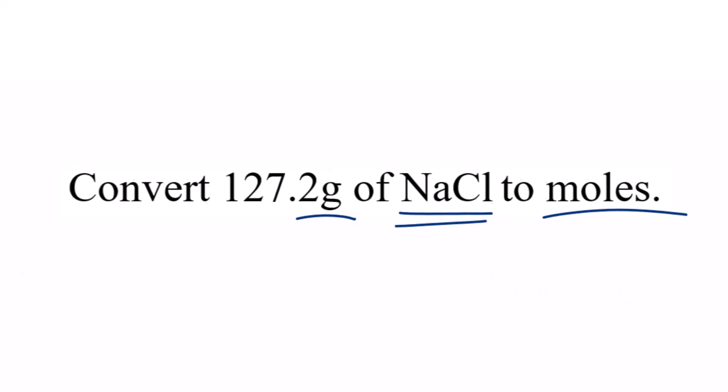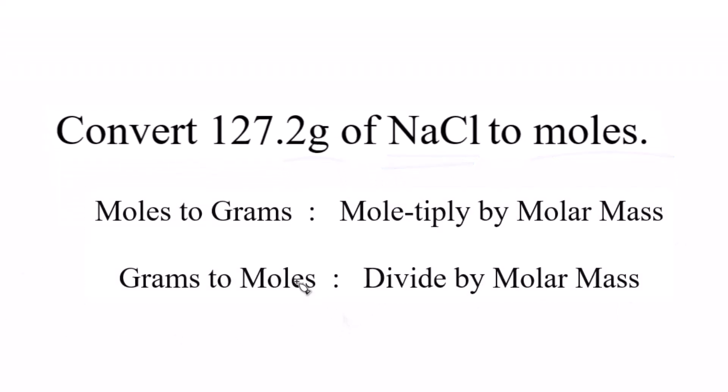So it's helpful to think about it like this. If we're going from moles to grams, we multiply by the molar mass of the compound here, NaCl. But in this case, we're going from grams to moles, so we just do the opposite. Grams to moles, we divide by the molar mass.